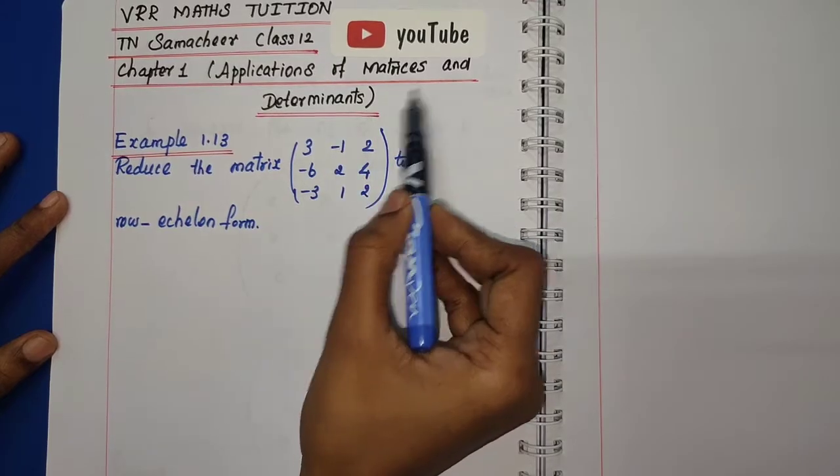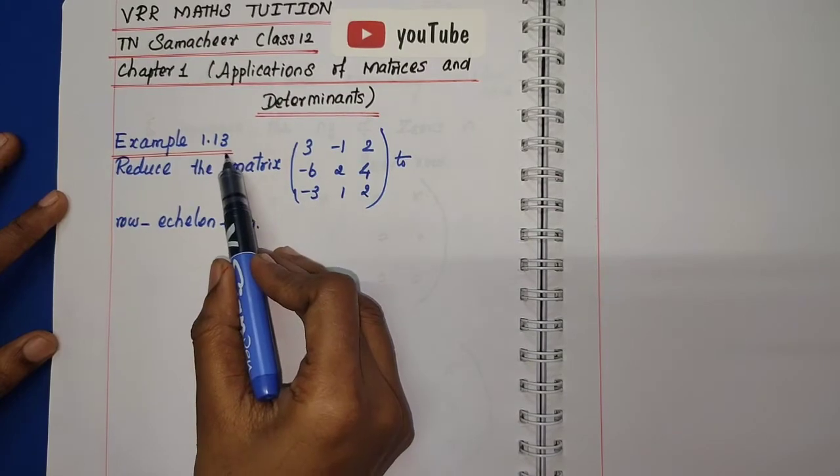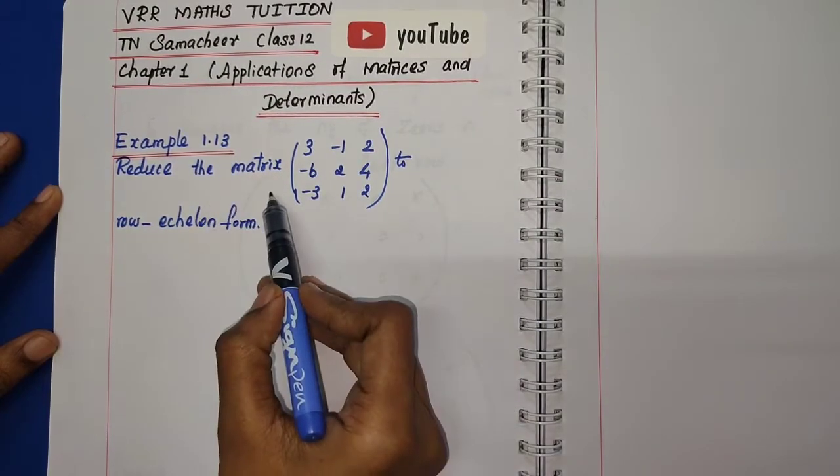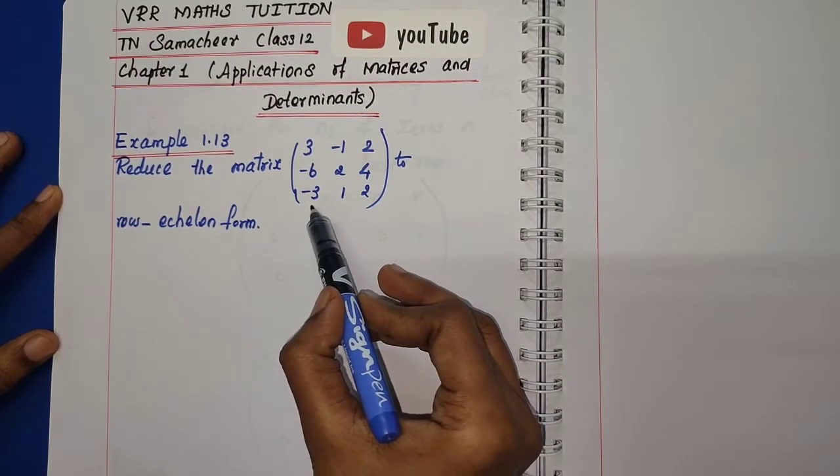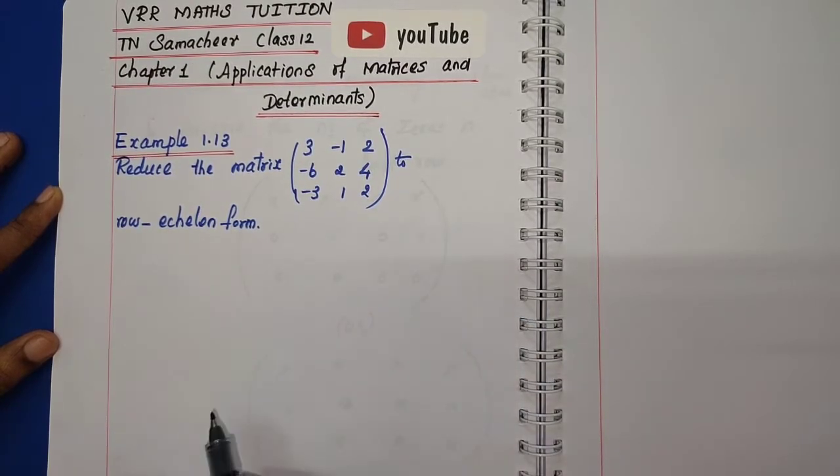Chapter 1: Applications of Matrices and Determinants, Example 1.13. Reduce the matrix [3, -1, 2; -6, 2, 4; -3, 1, 2] to row echelon form.